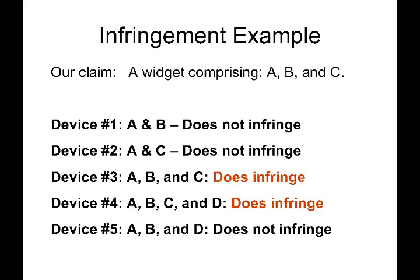Device 3 infringes even though it also has some extra stuff in element D. And device 5 does not infringe as it does not have element C. So now you get the idea that to infringe a claim, you need all the elements of that claim. This is an important fact in the realm of design around. If a competitor can accomplish the goal without having all the claim elements, then they can design around the claim.